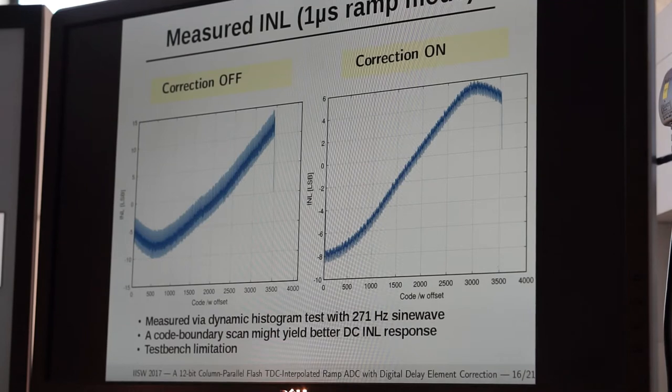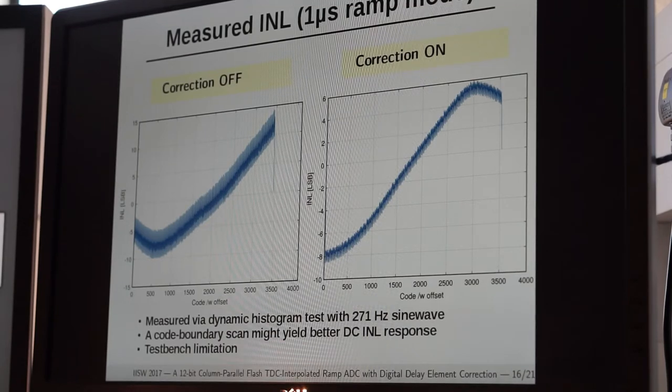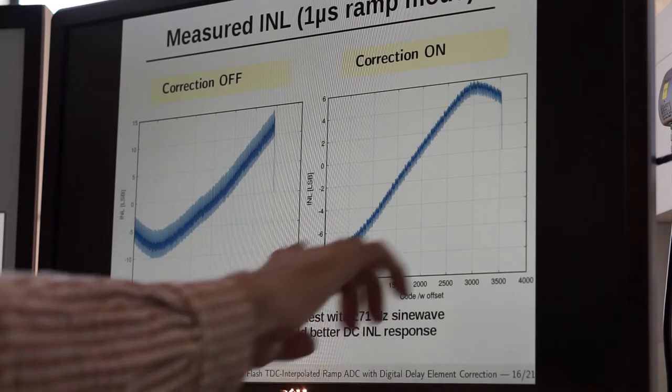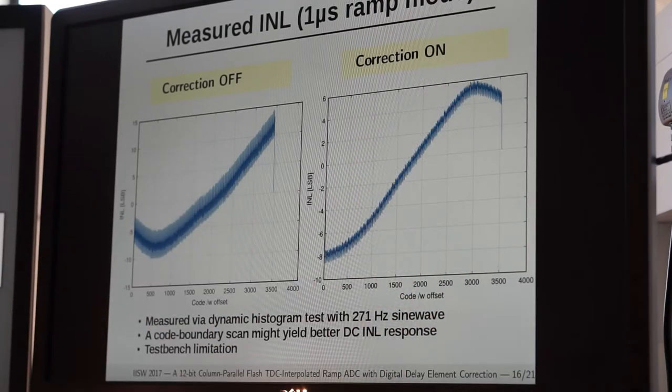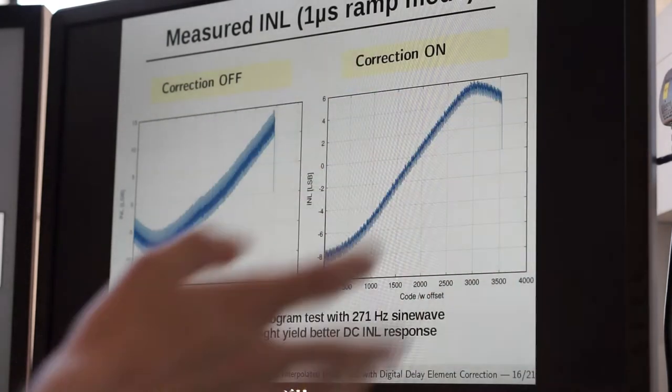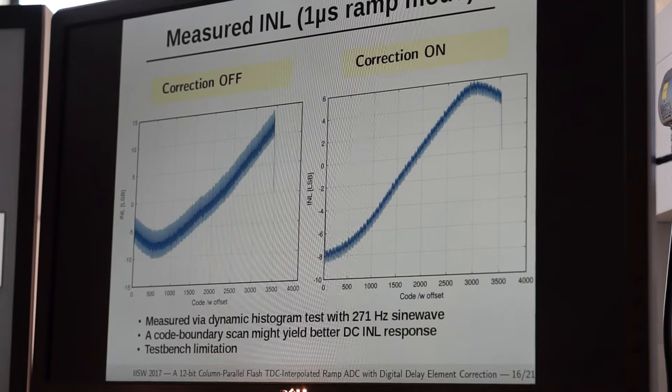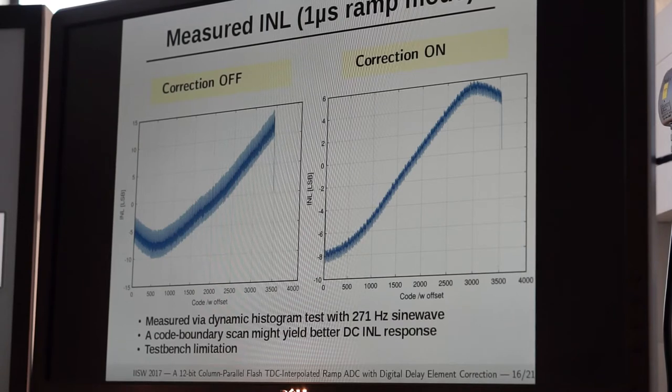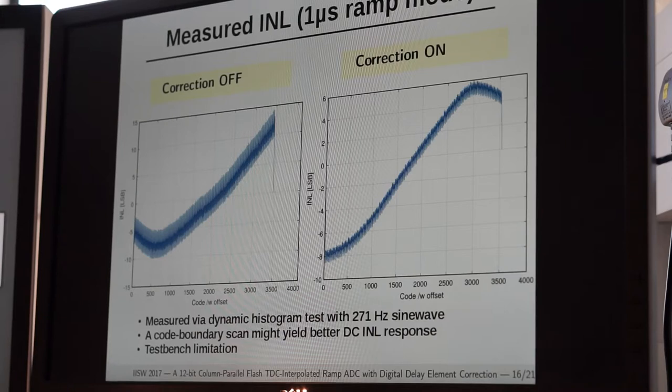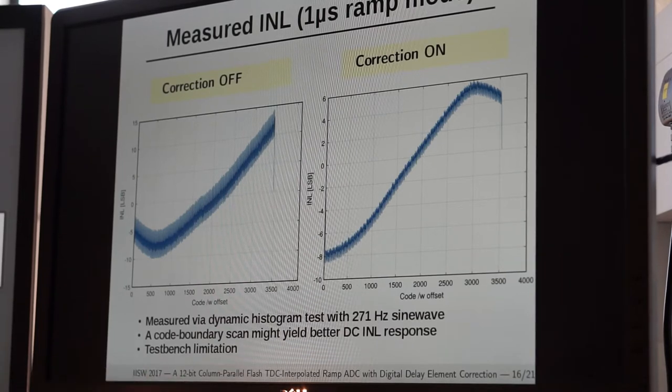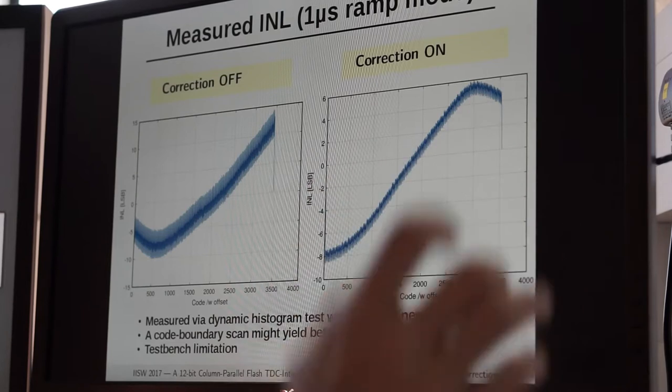What's shown on the screen at the moment is the measured integral non-linearity when correction is off and on. You might notice there is some INL, which is expected as INL is directly linked to DNL. However, these tests might have been a bit pessimistic and slightly influenced by the dynamic histogram test method I used to generate the plots. I think a code boundary scan might have resulted in better INL response. However, for an imaging application, this type of INL is probably fine.